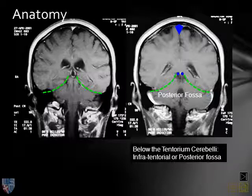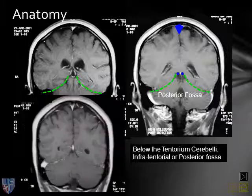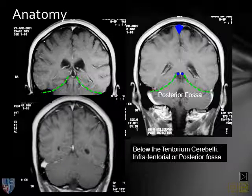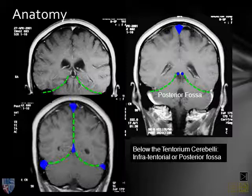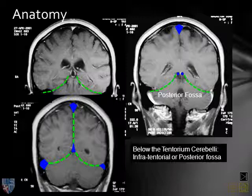The posterior fossa, or infratentorial compartment, is the space below the tentorium cerebelli. In this last coronal section, we can see how the falx cerebri attaches to the tentorium cerebelli, and at the junction of these dural reflections, we have the superior sagittal sinus, the straight sinus, and the transverse sinus.